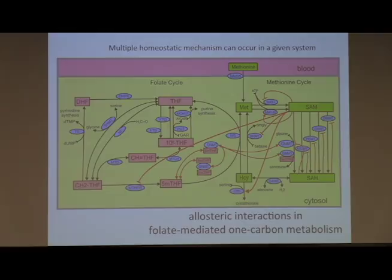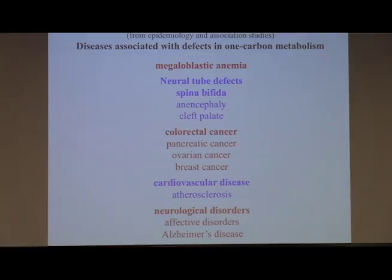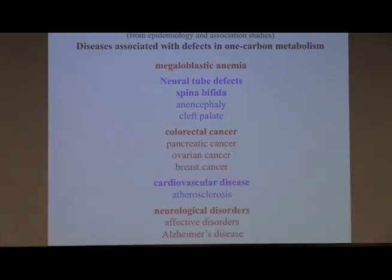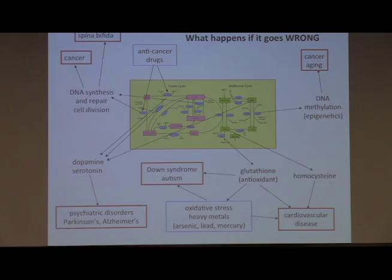We're going to talk about one carbon metabolism. It is important — it's been exceptionally well studied for medicine, because defects in that system, again from epidemiology and association studies, are associated with a host of diseases: birth defects, various forms of cancer, cardiovascular disease, neurological disorders. NIH has been pouring money into the study of the elements of this system for the past half century, so the bits and pieces are extremely well understood — well enough that we think we understand the whole system.